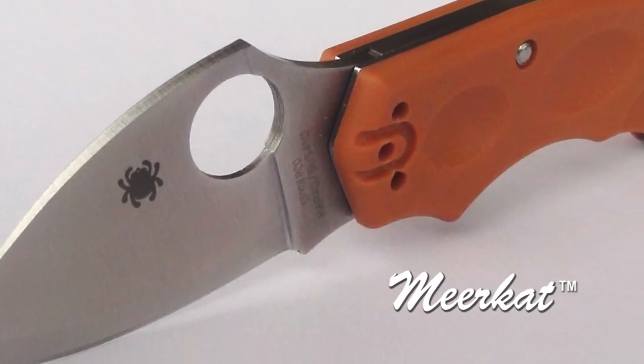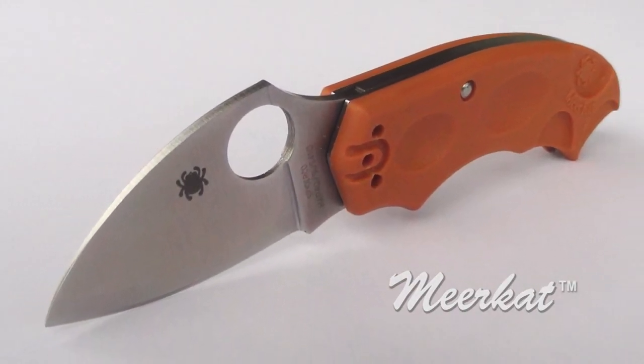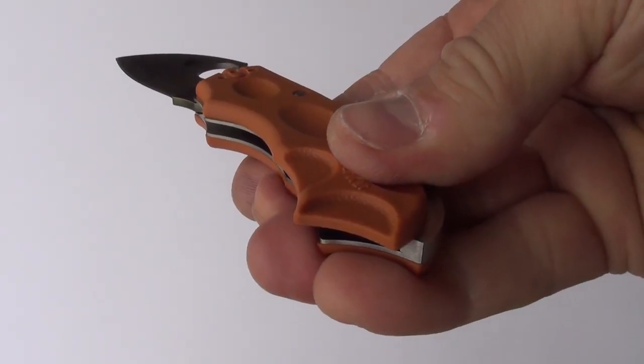The Spyderco Meerkat is a compact, extremely handy pocket knife with a secret: its unique phantom lock mechanism.